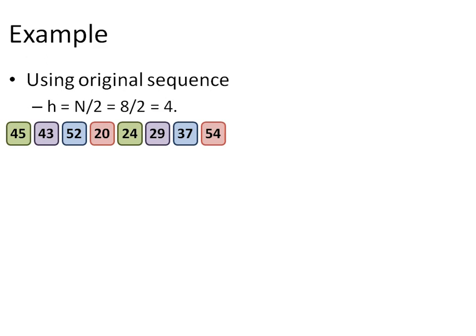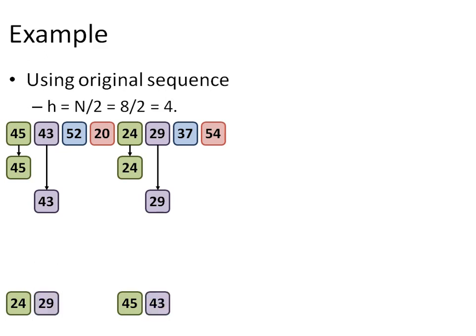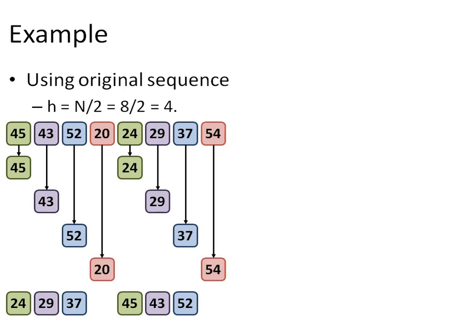There are 4 sublists presently and the same has been marked with different colors here. The first comparison is made between 45 and 24 directly, as they are the part of the same sublist and they will be swapped. Then comes the sublist 2 containing elements 43 and 29. Finally, the last sublist having 20 and 54 will be processed to complete the first pass of the algorithm.